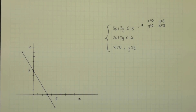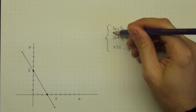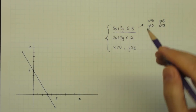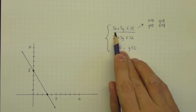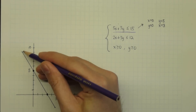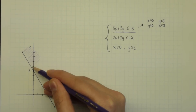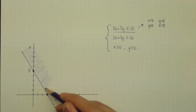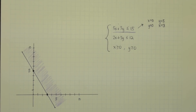We then check to see which side of the line is going to be shaded. For this first inequality, if we check the point (0, 0) — which is usually a good point to check — then 0 is indeed less than or equal to 15. So we shade the side that includes (0, 0).